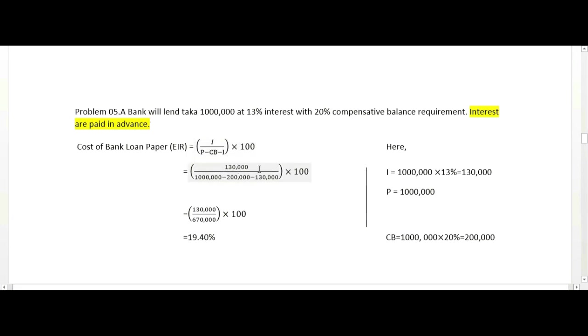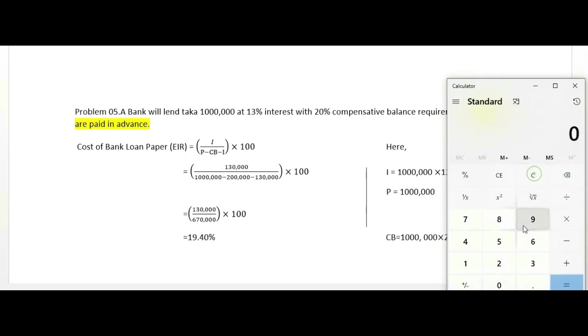Interest is 13 percent, compensating balance is 20 percent. With interest paid in advance, both the interest and compensating balance reduce the usable principal. Let me calculate this.